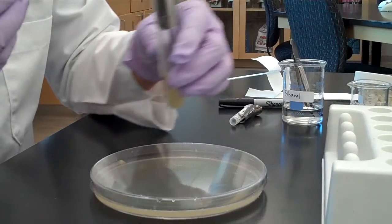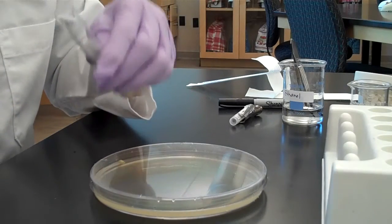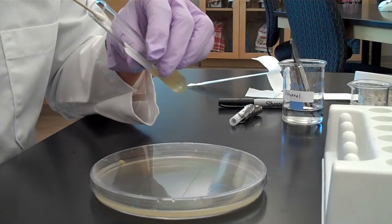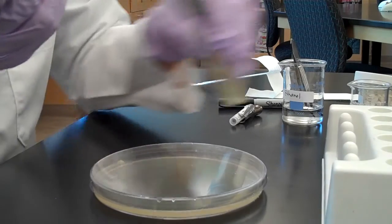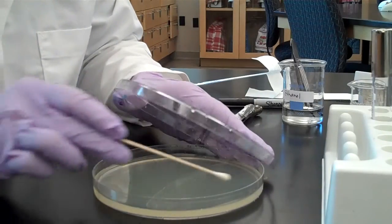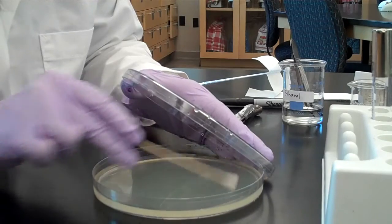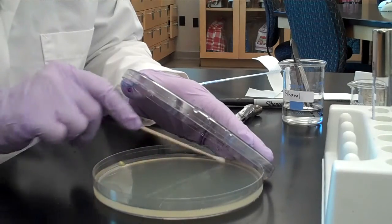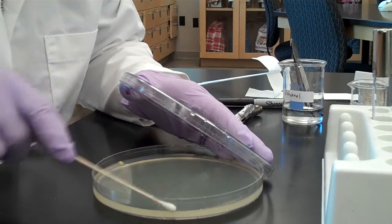Dip the sterile swab into your culture, and then swab the entire surface of the agar plate. Go back and forth, making sure you cover every little bit of that agar with the bacteria.